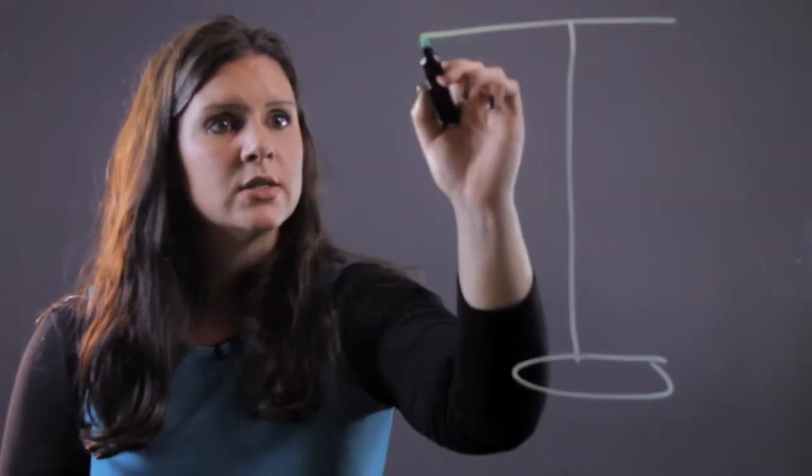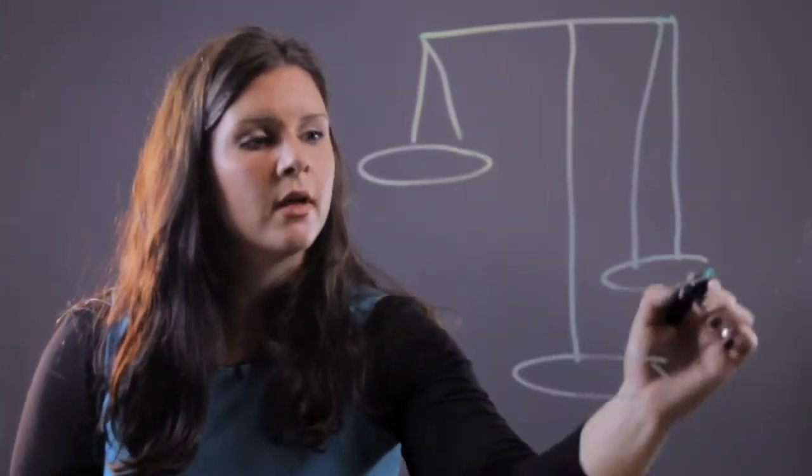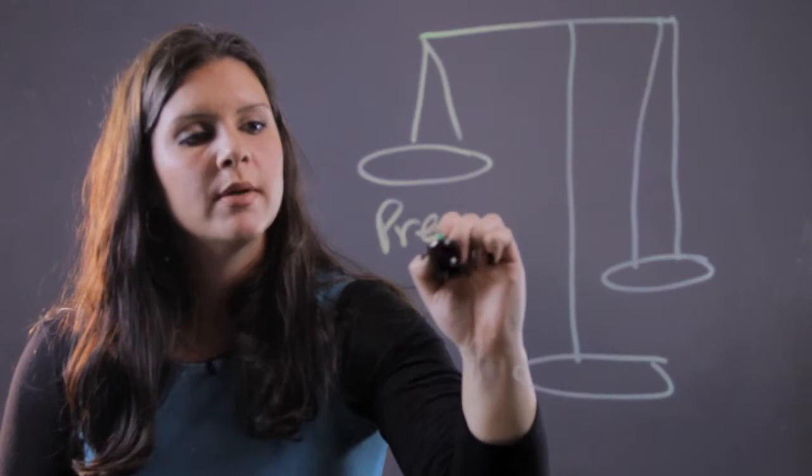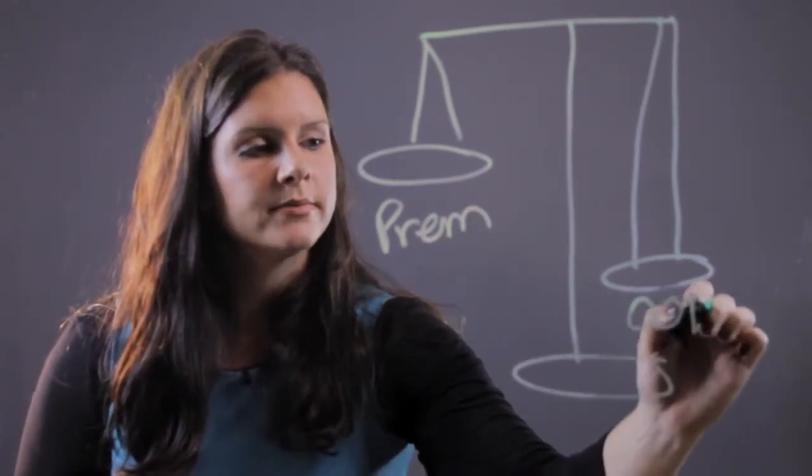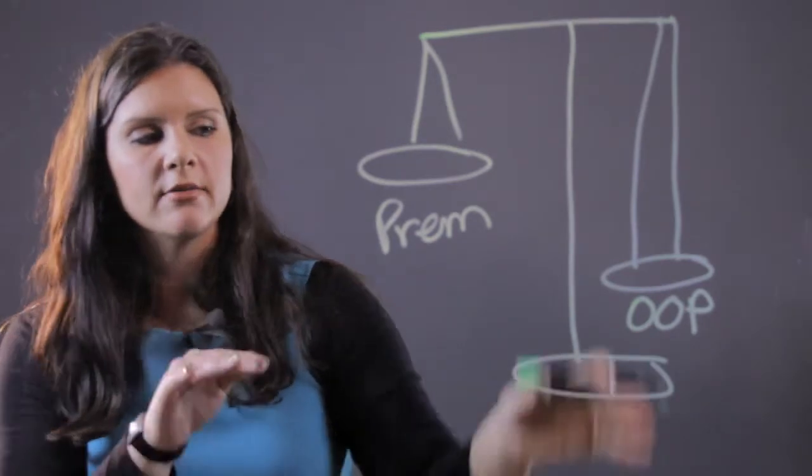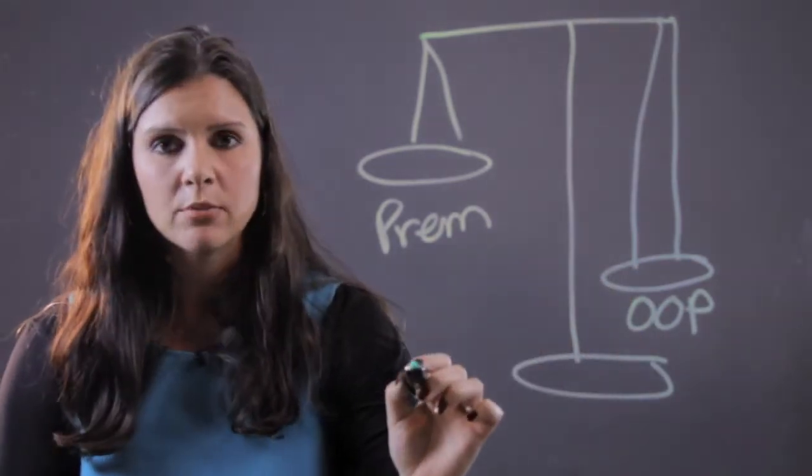So when it comes to insurance, it's a scale. Either you're going to have a lower premium so you're going to pay more out-of-pocket, or you're going to have the inverse where you're going to have less out-of-pocket and you're going to have a higher premium.